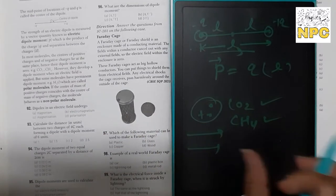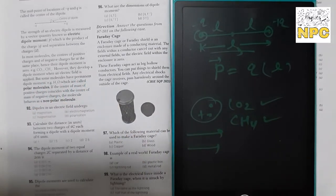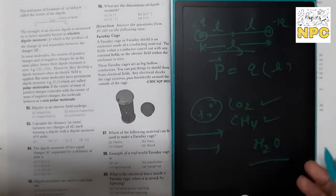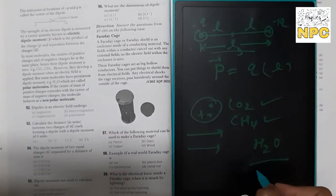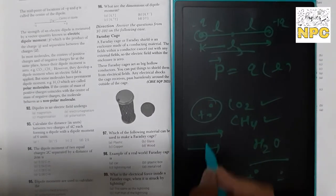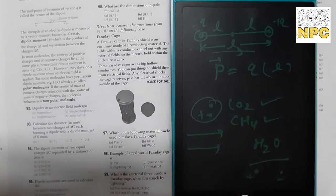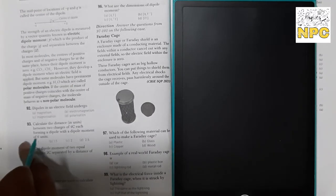But some molecules have a permanent dipole moment — for example, H₂O. Water molecules have a permanent dipole moment. This information is given in the paragraph. So let us now solve some important questions related to electric dipole.